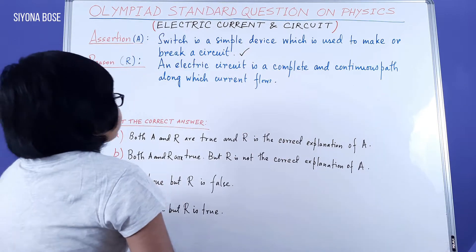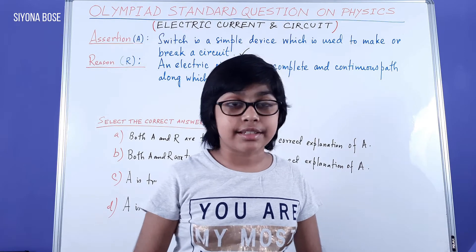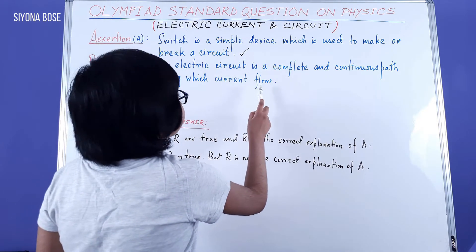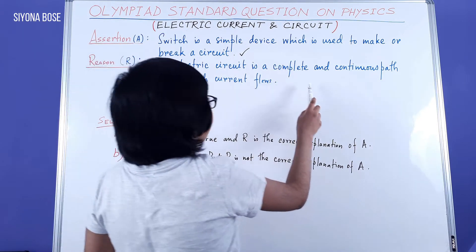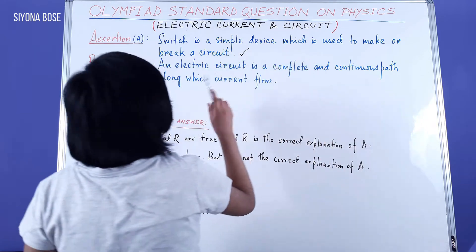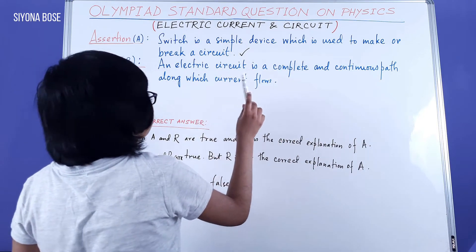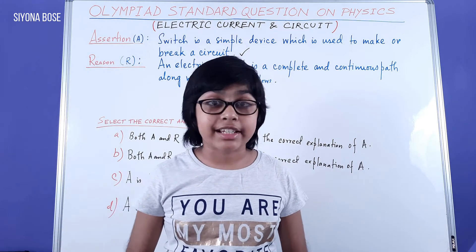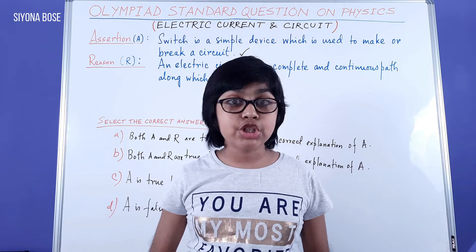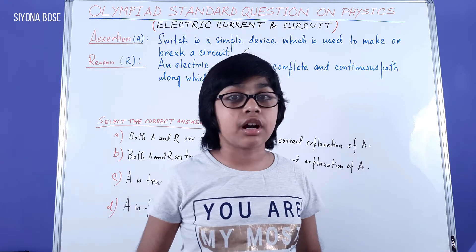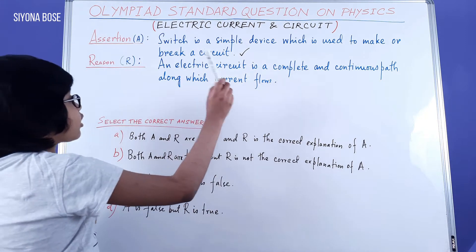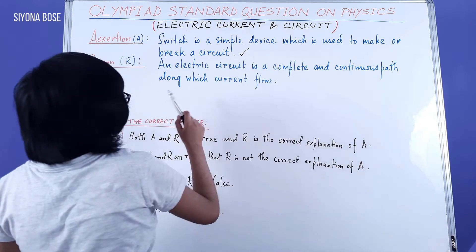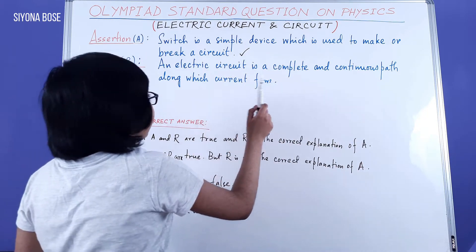Now we will move on to our reason. Reason: An electric circuit is a complete and continuous path along which current flows. This is also completely correct because according to the definition of electric circuit, it is a complete and continuous path along which current flows.